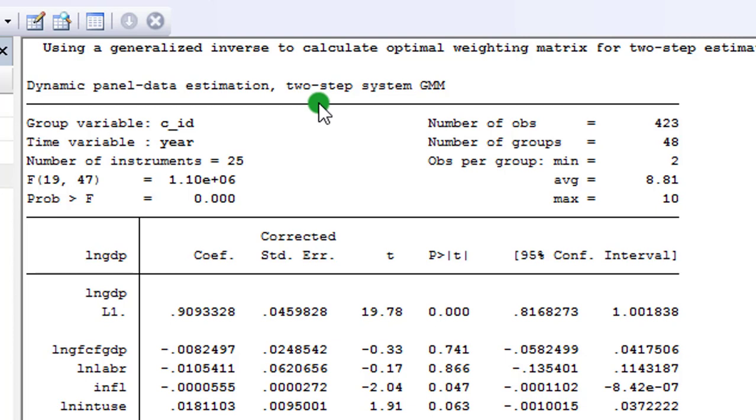So here is the Stata output from a two-step system GMM estimation. At the top of the table, you will always see the type of estimation that you have just performed. In this case, we have a two-step system GMM. So this is a typical GMM output. So whether it's a difference GMM or system GMM, the outputs look exactly the same. Only the contents are different. At the upper part of the table, you have some information that is specific to your data.